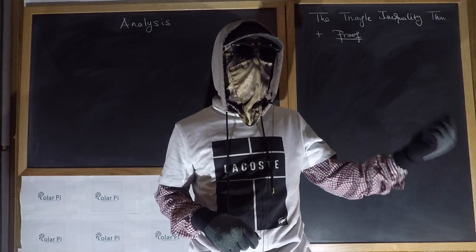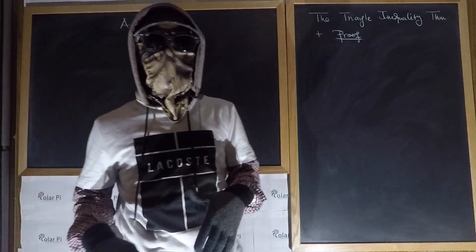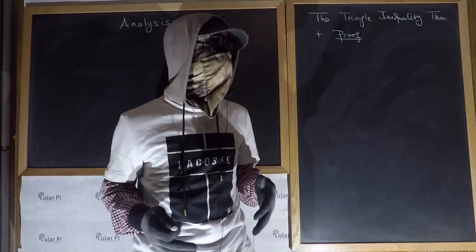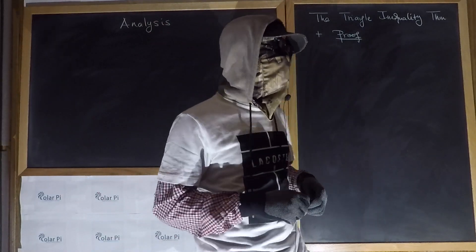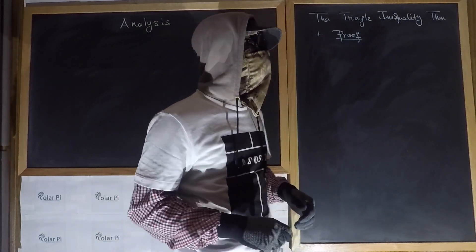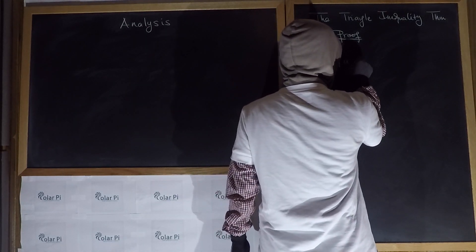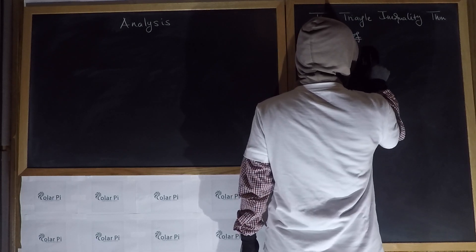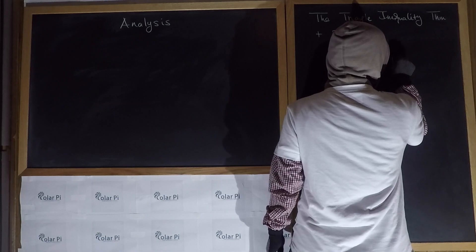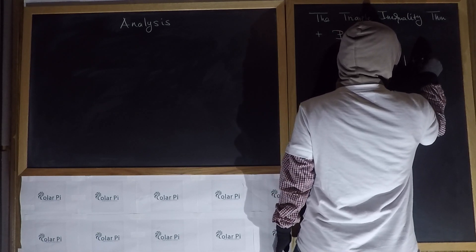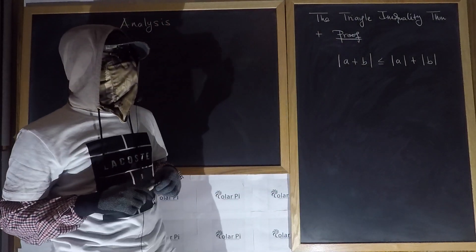In that course — mathematical analysis, or simply called analysis — one of the first things that you should learn should be the Triangle Inequality Theorem, a very useful theorem that we're going to state and prove in this video. The theorem says that the absolute value of A plus B has to be less than or equal to the absolute value of A plus the absolute value of B, for two real numbers A and B.